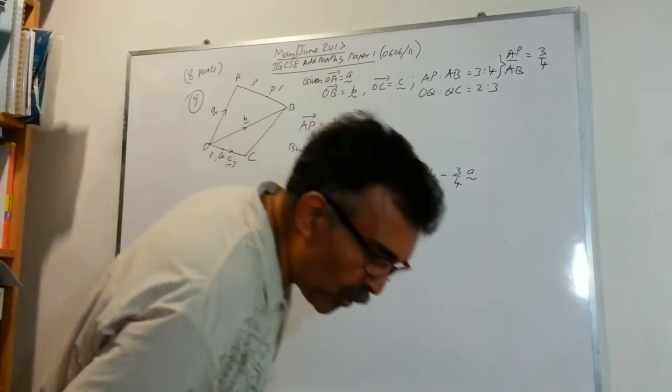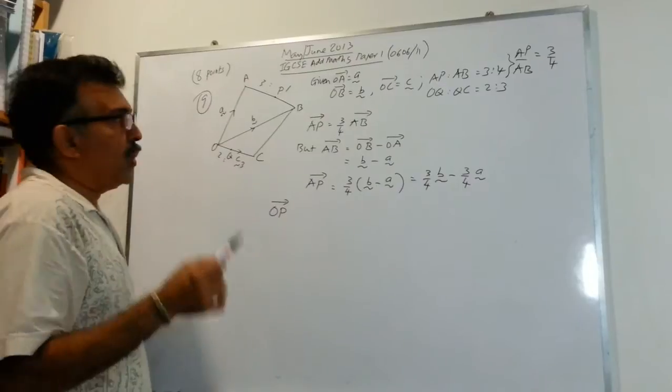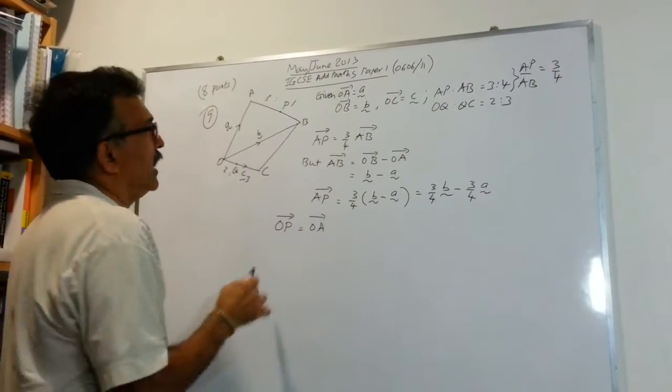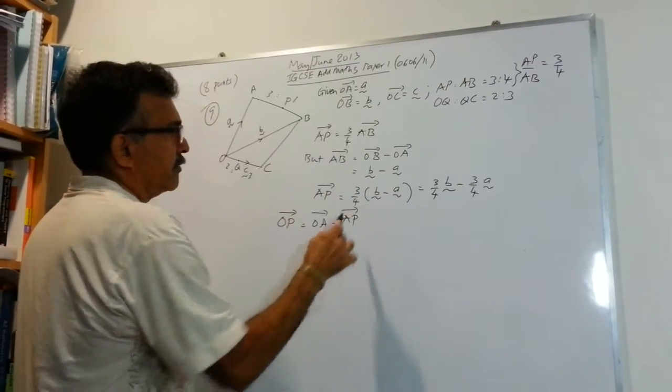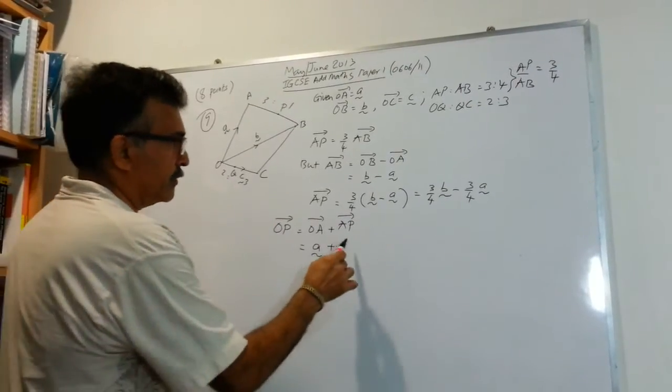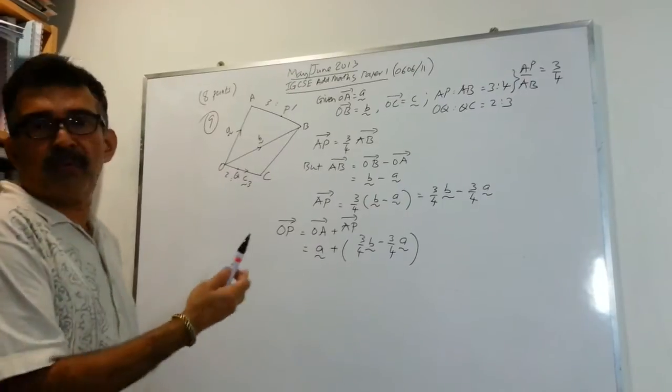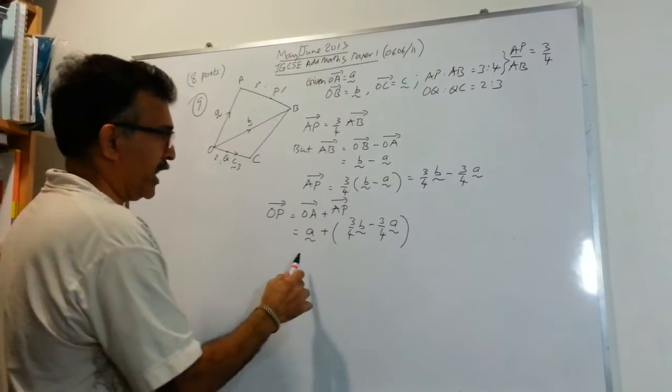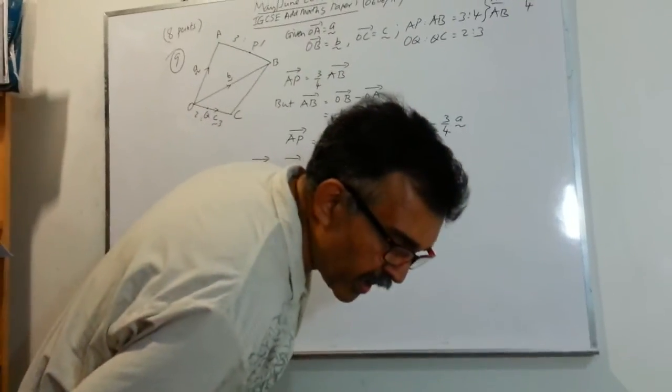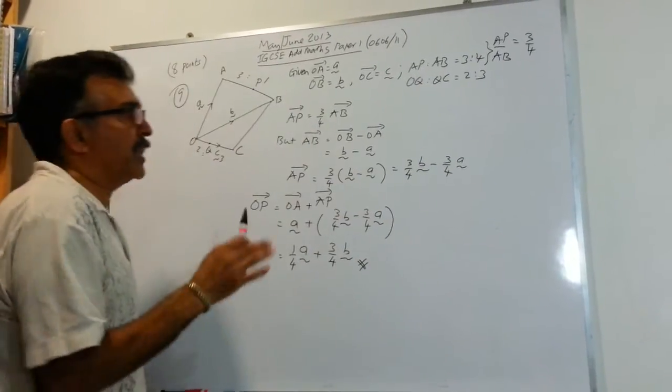And, in the same part, they ask you to show that OP is something. So, OP, how do you get from O to P? You can get from O to P by first going from O to A, and then going from A to P. So, let's write OA. Let's borrow the answer from AP. And now, all we have to do is just clean this up and we are done. A vector A minus 3 over 4 A will be 1 over 4 A and plus 3 over 4 B. You are asked to show this and that's it. So, 1 over 4 A plus 3 over 4 B.